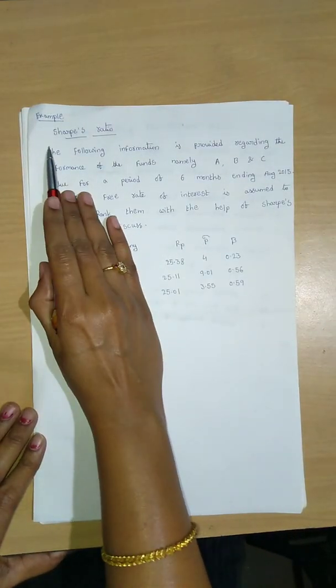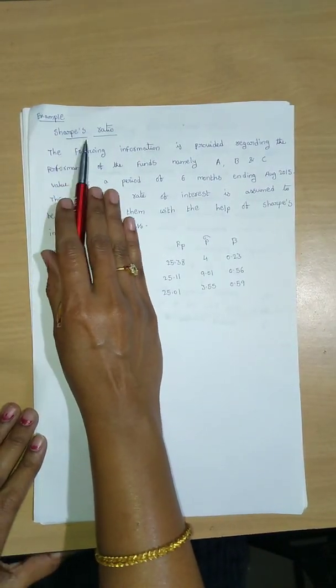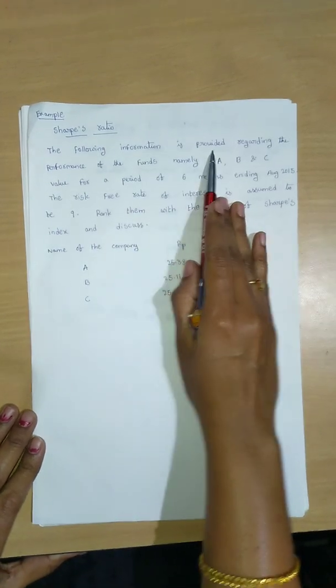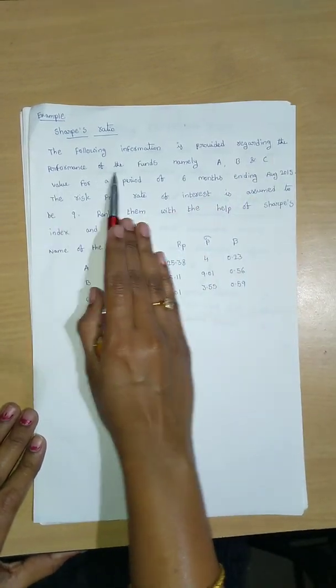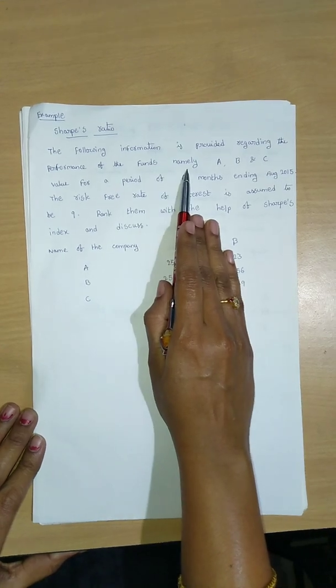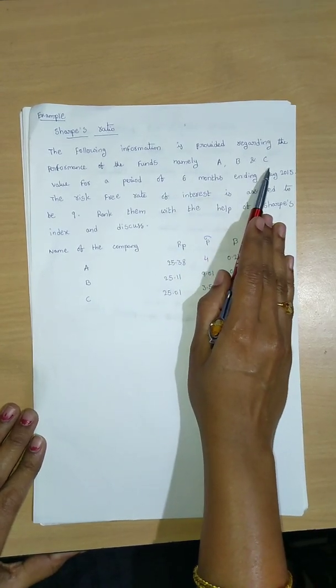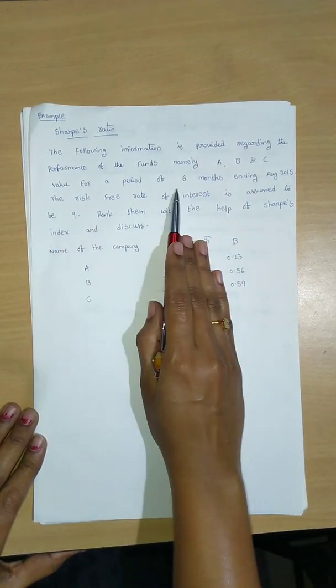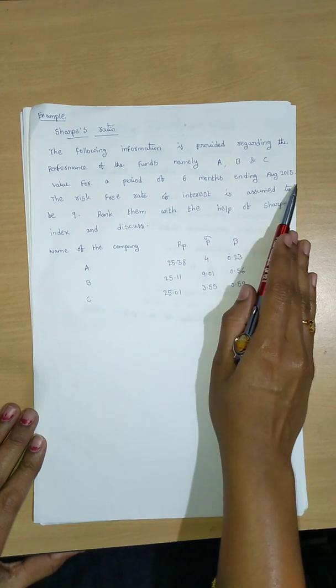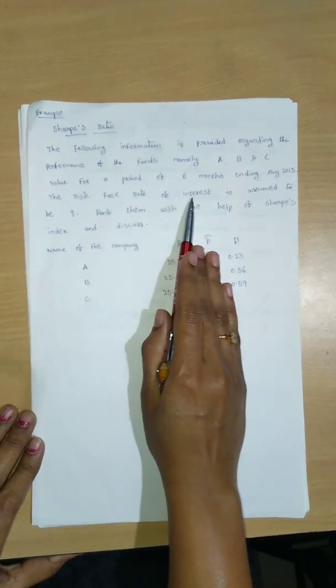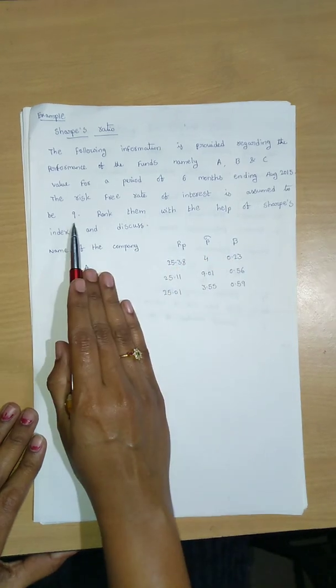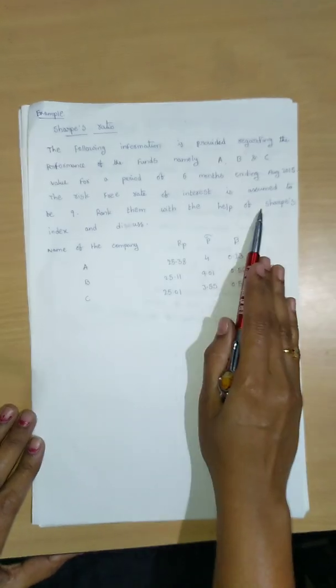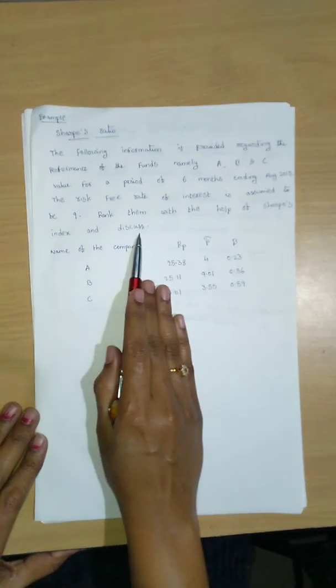So, an example problem on Sharpe ratio. The following information is provided regarding the performance of the funds, namely A, B, and C, for a period of six months ending August 2015. The risk-free rate of interest is assumed to be 9%. Rank them with the help of Sharpe index and discuss.